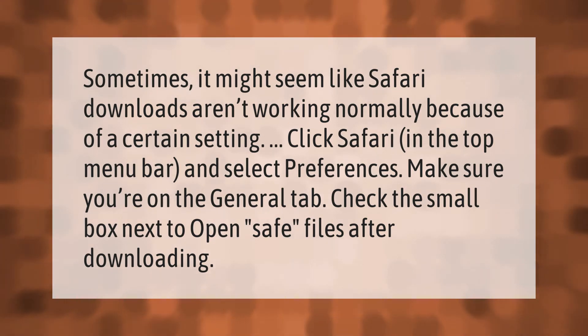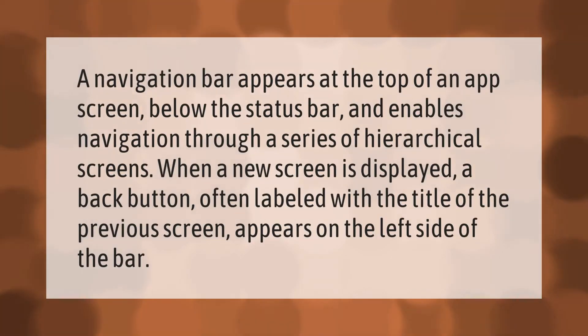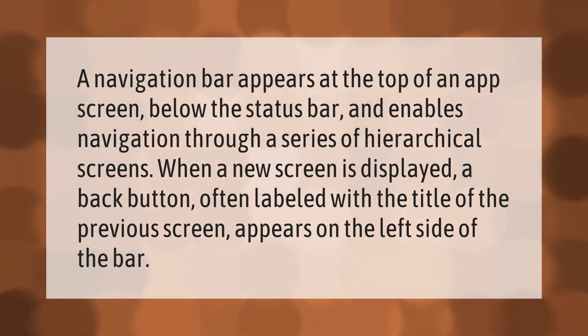A navigation bar appears at the top of an app screen, below the status bar, and enables navigation through a series of hierarchical screens. When a new screen is displayed, a back button — often labeled with the title of the previous screen — appears on the left side of the bar. Thank you for watching, please subscribe and hit the bell notification.